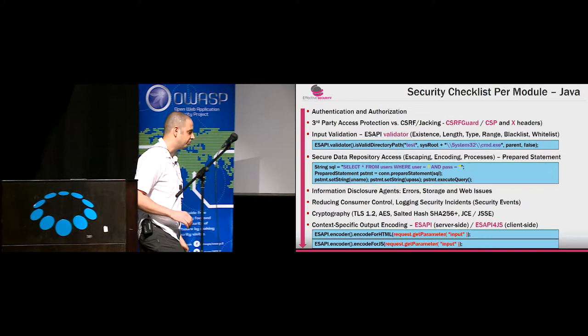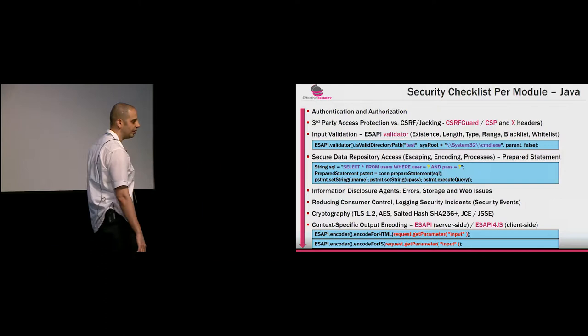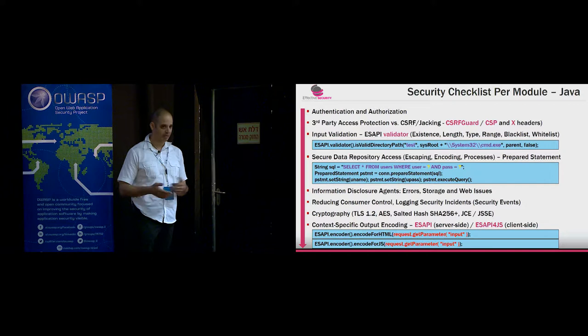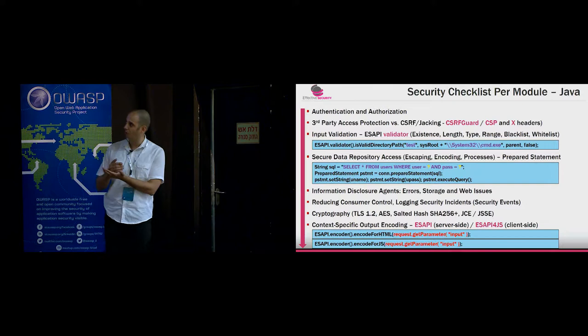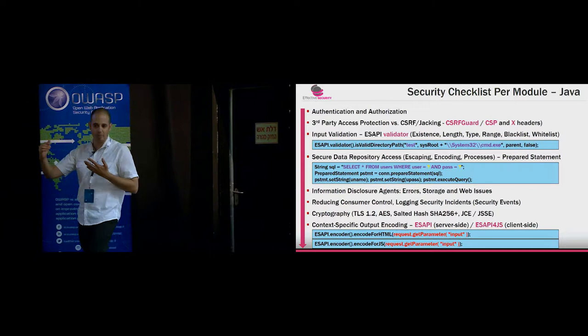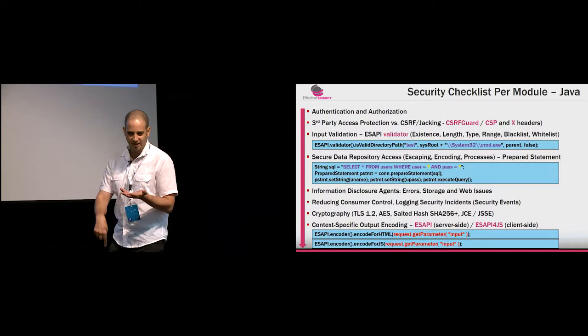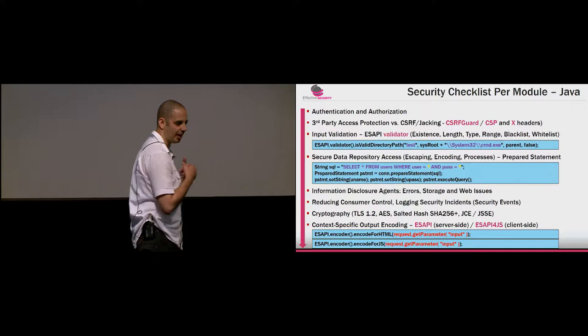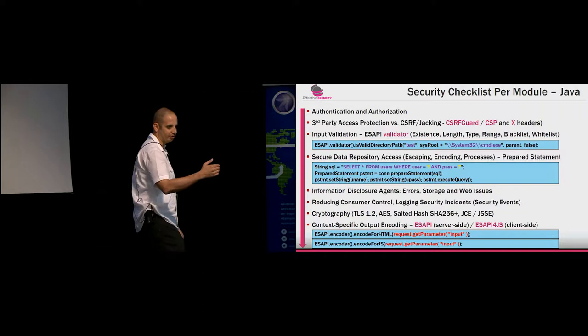The fourth mechanism is secure data repository access. I'm intentionally avoiding the word 'database' because there are various data repositories — the operating system, an internal file share. The protocol used by the front-end server to access the internal data repository may vary: SQL, LDAP, operating system access, or JSON when accessing MongoDB. In SQL, use classes that embed syntax escaping as much as possible while accessing the data repository.